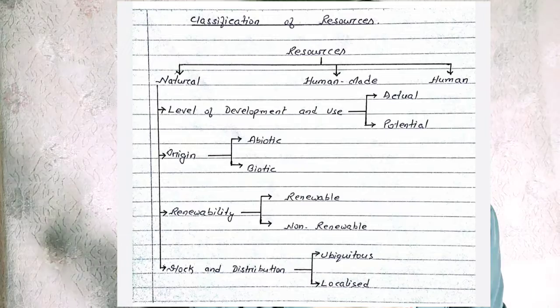So that is the classification of natural resources. Human-made resources are made by human beings, like the chair, table, books, pencil, pen, and so on. Human resources are also one type of resource because it is human beings who give utility and value to all other things. Now I am going to show you a flowchart so you can easily understand the different types of resources and their sub-classification.